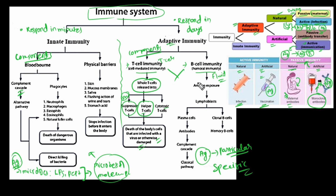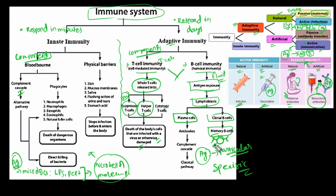B-cells mediate humoral immunity. Upon antigen exposure, B-cells convert into lymphoblasts and then into plasma cells, while also forming memory cells. Memory cells keep the memory of antigen exposure so that for a second or subsequent exposure, a faster secondary immune response is generated. Plasma cells secrete antibodies, which then lead to activation of the classical complement pathway. This is all about the components of the immune system and innate and adaptive immunity.